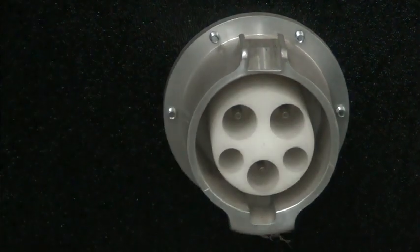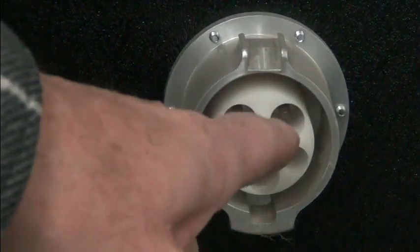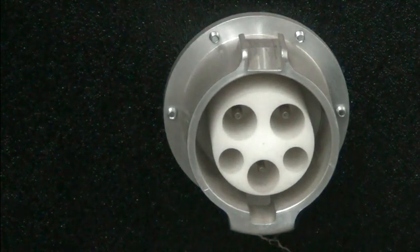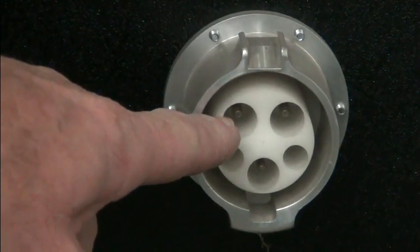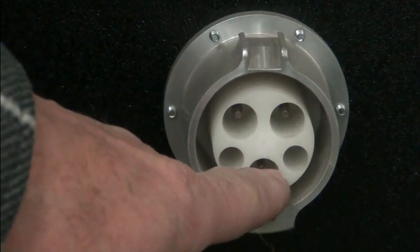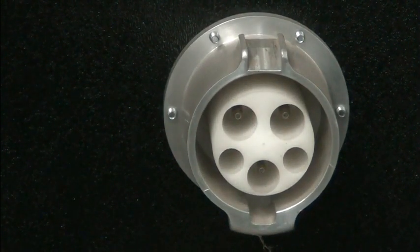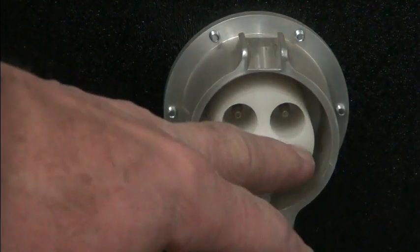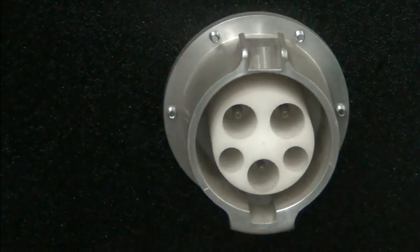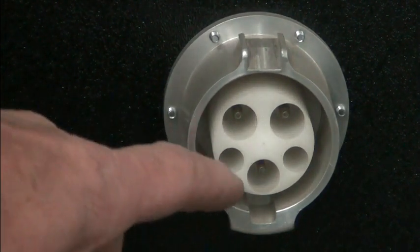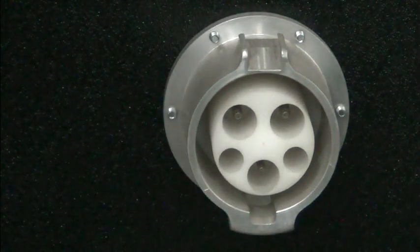So the two pins on top, this right one is line one. This is line two, and the bottom one is ground. Then you have the two little ones, the control wiring. The one on the right here is the proximity signal, and the one on the left is the pilot signal.